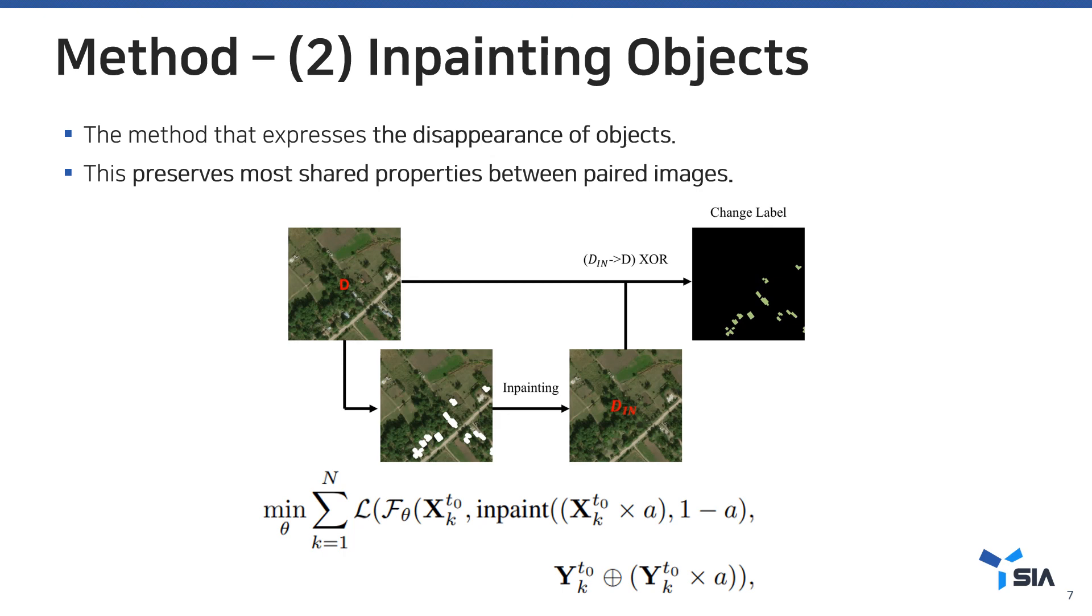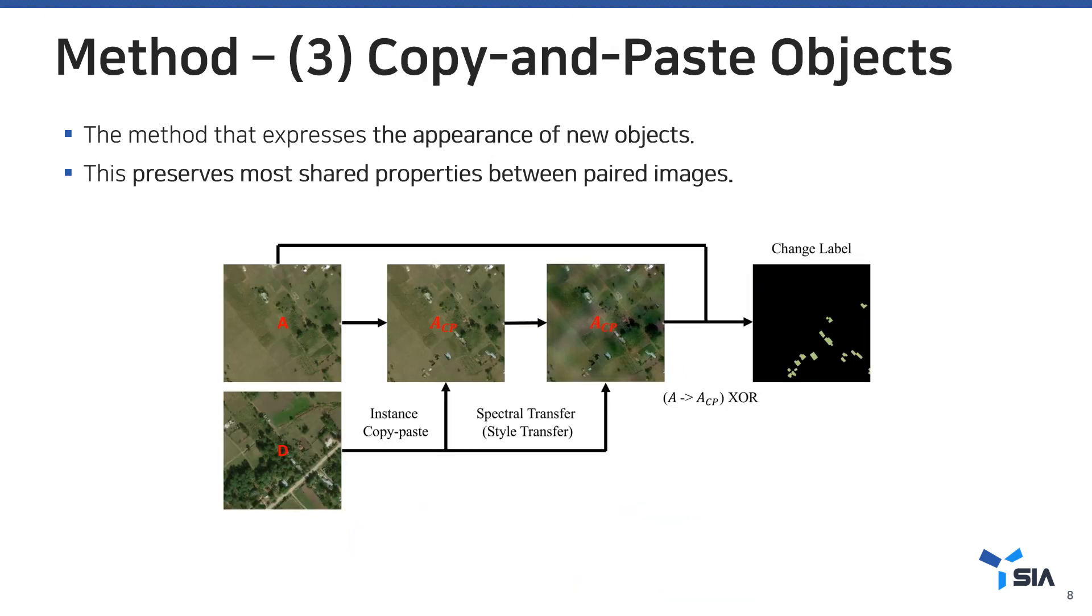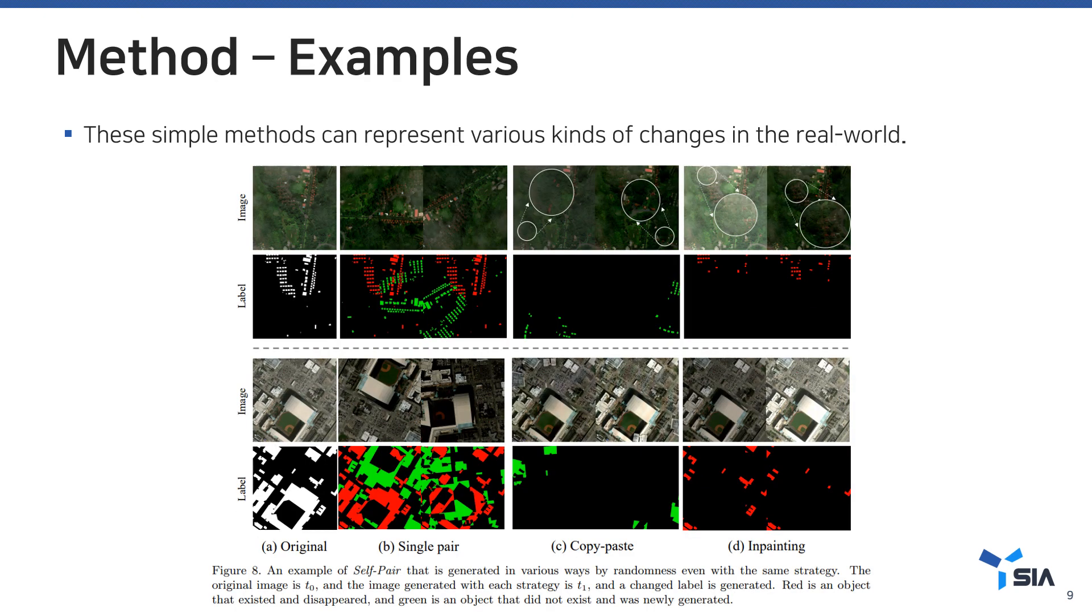Inpainting objects can express disappearing objects and preserves most shared properties between two images. Copy-paste expresses the appearance of new objects and maintains similar patterns between images. These simple methods can represent various kinds of changes in the real world.